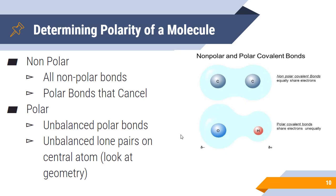To determine whether a molecule is polar or nonpolar: if it's nonpolar, you'll have either all nonpolar bonds or polar bonds that cancel each other out. For a molecule to be polar, you need unbalanced polar bonds or unbalanced lone pairs on the central atom. It's essential to look at the geometry to determine if this is the case.